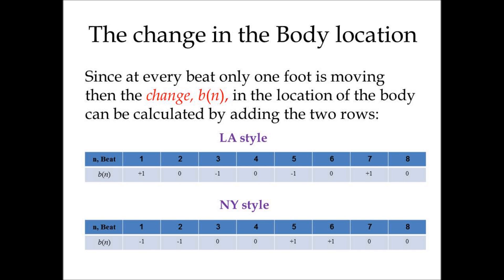So now we have a vector b(N) which depends on N, the number of beat. In L.A. style it is: +1, 0, -1, 0, -1, 0, +1, 0. In New York style it is: -1, -1, 0, 0, +1, +1, 0, 0. Again, you cannot see a substantial difference between them.